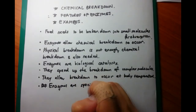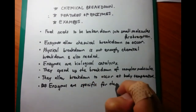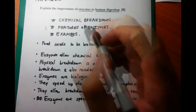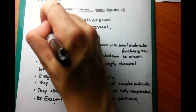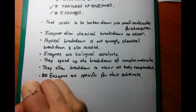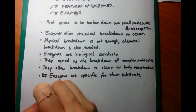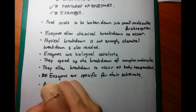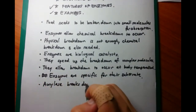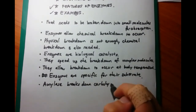Enzymes are specific for their substrate. For example, amylase is only going to break down starch — it's not going to break down lactose, for example; that requires a separate enzyme. The next point to write down is that amylase breaks down carbohydrates.